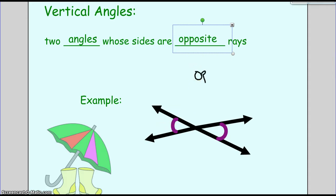And they are congruent when two lines intersect. I have opposite angles that are congruent.